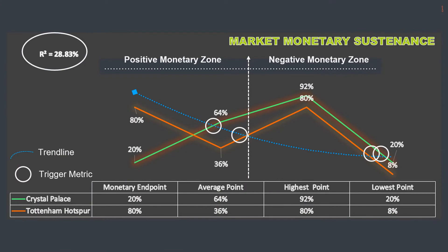Crystal Palace was given an R2 metric deviation score of success, with less than 30% favouring home or away. With this standard in place, Crystal Palace is in a better position.